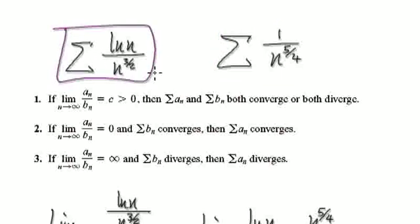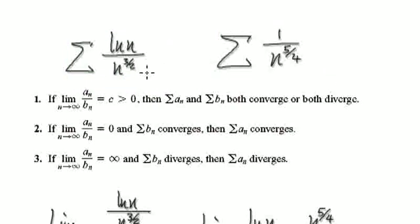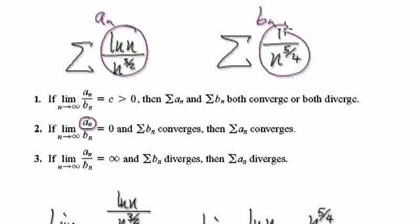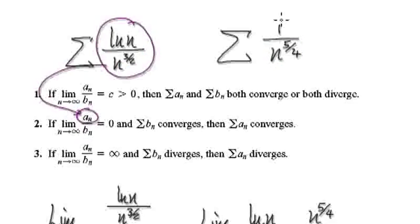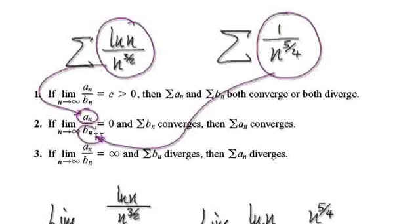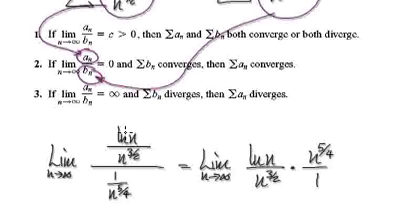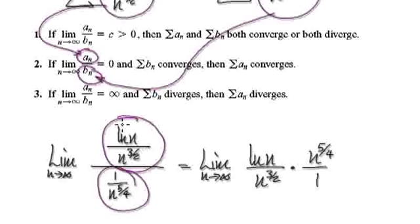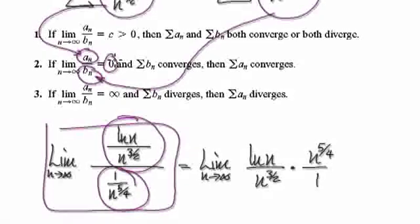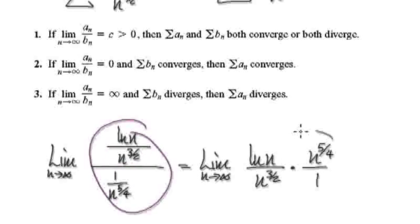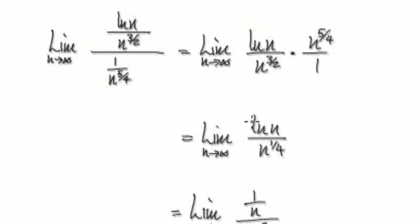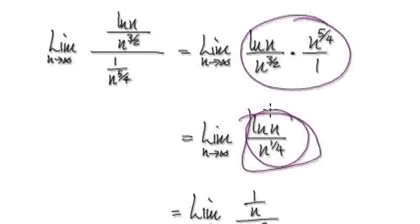So we are trying to establish if this series will converge or if it will diverge. We are going to compare it to n to the power of a quarter. Let this be our AN, and let this be our BN. Now let's take the limit of AN over BN. This is our AN and this is our BN. Let's see what the limit is. We're trying to find the limit of this expression — rewrite this, and when you tidy it up, it gives you this simplified form.